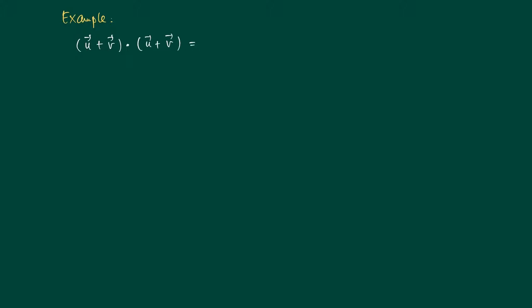We may use the distributivity property, and what we get here is (u+v)·u, this is one vector, times u, plus now the dot product (u+v)·v.